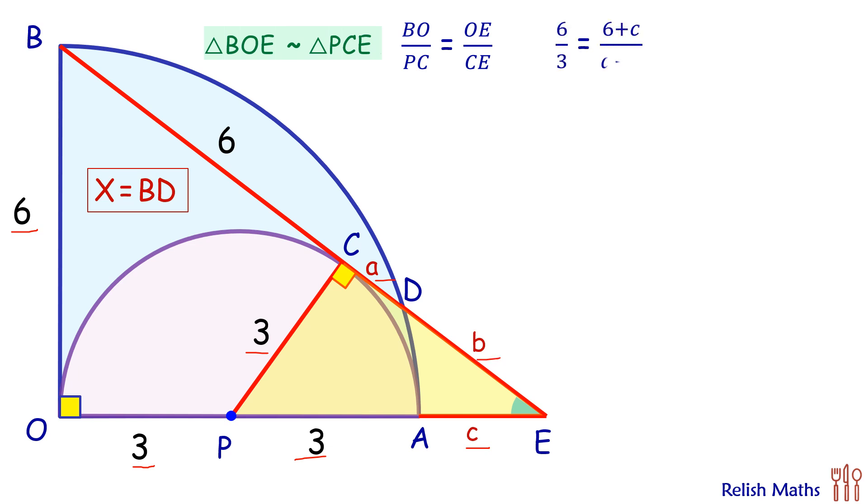Putting these values in the equation will get 6 upon 3 is 6 plus C upon A plus B. So here simplifying it will get value of A plus B as 3 plus C by 2.